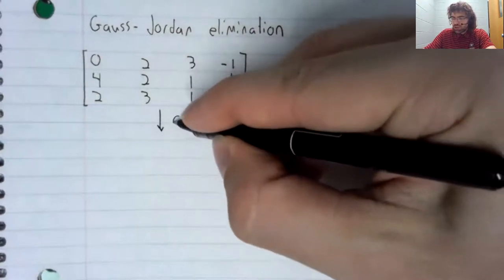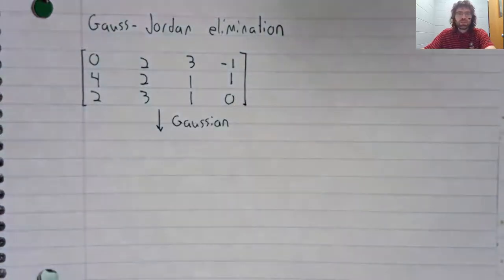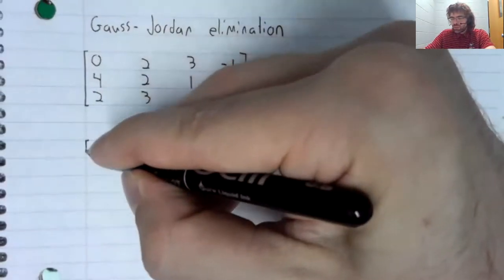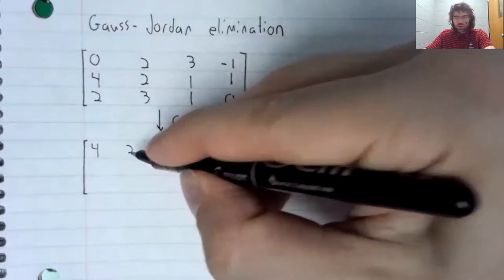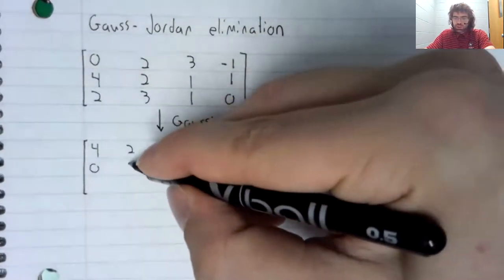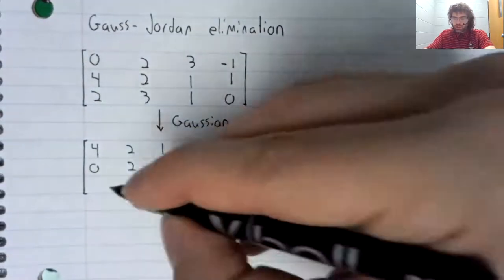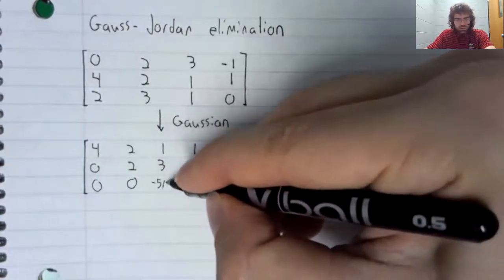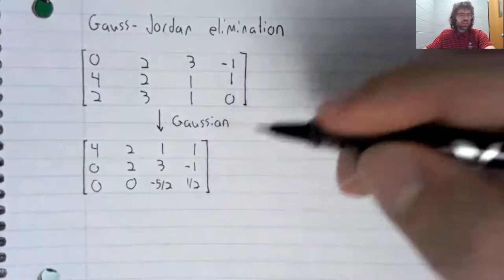The first step is to perform Gaussian elimination. We've done that several times already, so I'm not going to show the details again. Let me just copy down what I got when I performed Gaussian elimination.